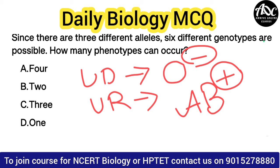In MCQs, you may be asked whether it is O negative or O positive. You need to understand why O negative is the universal donor and why AB positive is the universal recipient. Once the concept is clear, this will also be understood.